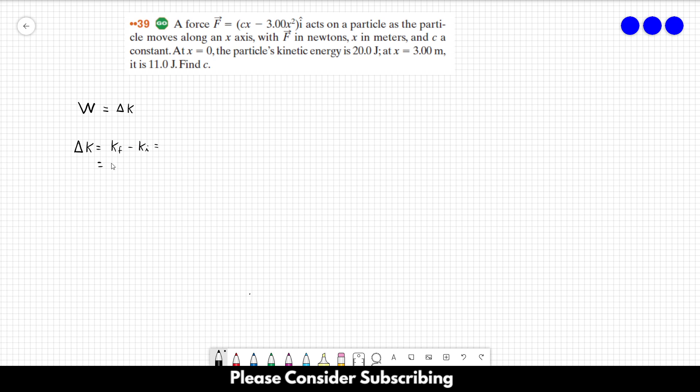And in our case, this is equal to 11 minus 20, which is equal to minus 9 joules. So we know that the work done is equal to minus 9 joules.